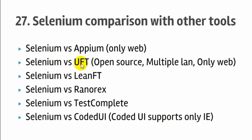Then let's move on to UFT, also known as QTP. UFT was earlier known as QTP and it is a very popular tool, but the difference with Selenium is that UFT is a licensed tool — it is not open source like Selenium — so you will have to pay a lot of money to buy the licenses. Another major difference is that in Selenium we can do scripting in various languages like Java, C#, .NET, Ruby, Python, PHP, etc.